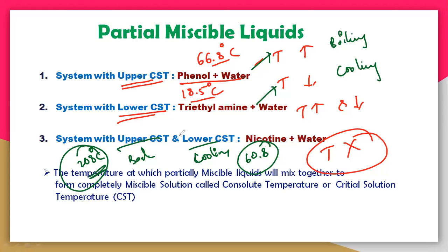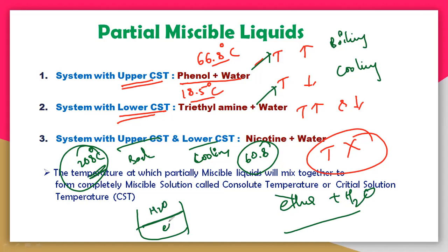The fourth case is when temperature is independent of solubility — it doesn't affect miscibility whether you increase or decrease temperature. The example is ether and water. Ether is non-polar and water is polar. Ether has a very low boiling point, so on increasing temperature, ether easily evaporates. You get two immiscible layers regardless of temperature change — so temperature does not affect the miscibility of ether and water.